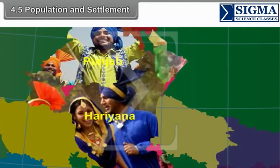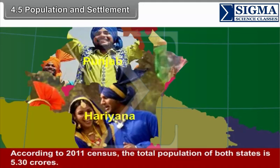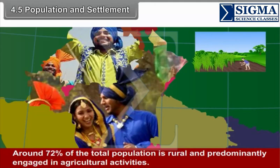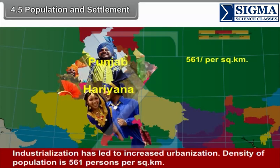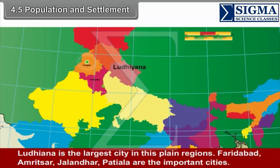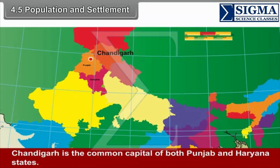4.5 Population and Settlement. According to the 2011 census, the total population of both states is 5.30 crores. Around 72% of the total population is rural and predominantly engaged in agricultural activities. Industrialization has led to increased urbanization. Density of population is 561 persons per square kilometer. Ludhiana is the largest city in this plain region; Faridabad, Amritsar, Jalandhar and Patiala are other important cities. Chandigarh is the common capital of both Punjab and Haryana.